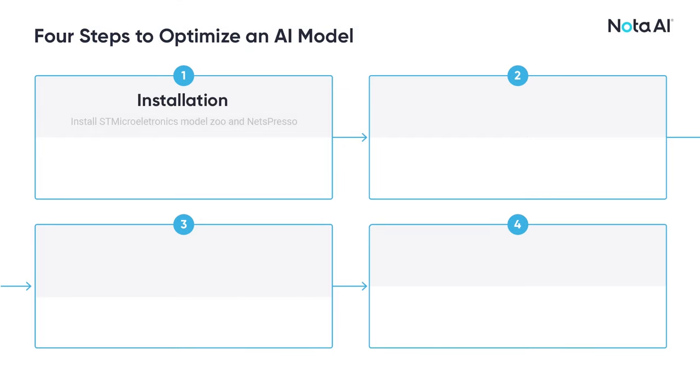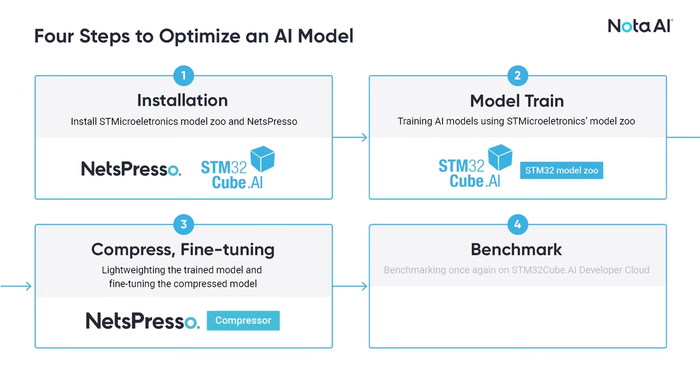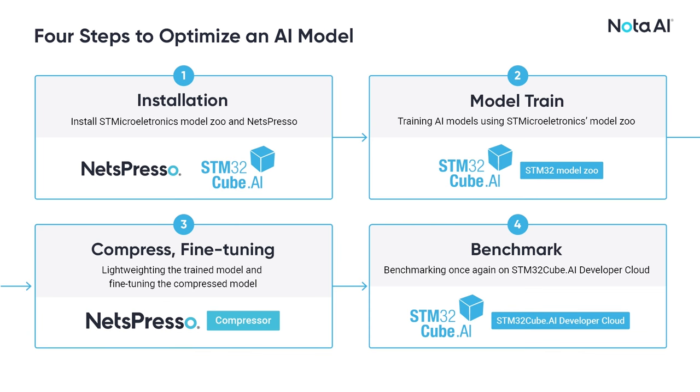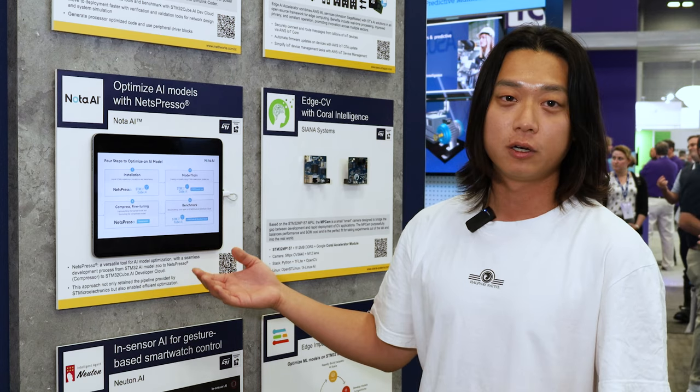This is the whole process with Netspresso and STM32Cube AI. We start with the STM32Cube AI model zoo, where you can train AI models. Then you put the trained model into the Netspresso compressor to compress it. You can run many experiments using our compression technologies, then fine-tune or retrain the model to recover accuracy, and finally benchmark those models on STMicro devices using STM32Cube AI.